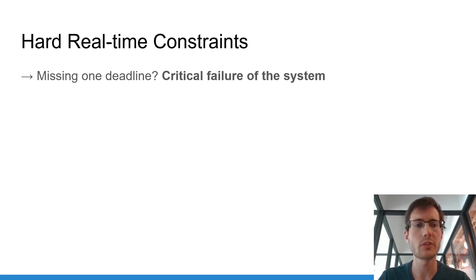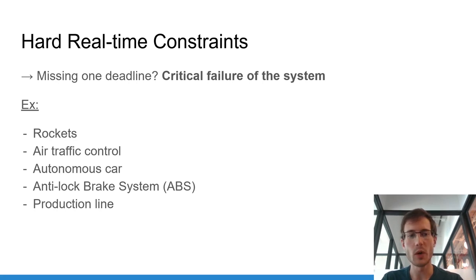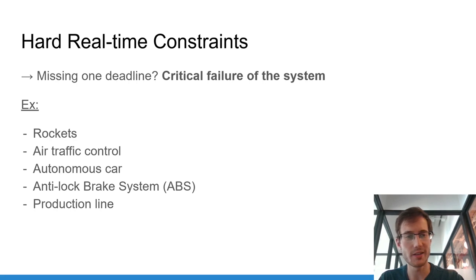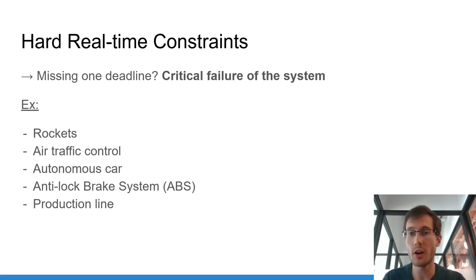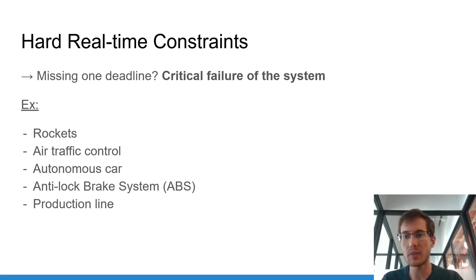Hard real-time is the most strict constraint. A failure to meet even one deadline means the system has critically failed — there is absolutely no flexibility. Hard real-time constraints are applied to critical systems such as rockets. If one propulsor is not working on time, the rocket just explodes. Another example is air traffic control — it's simply not imaginable that two planes will collide. You have to ensure each plane has enough time to pass so two planes don't crash into each other.